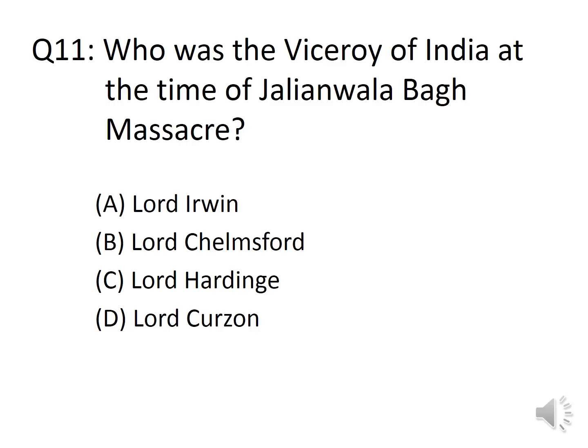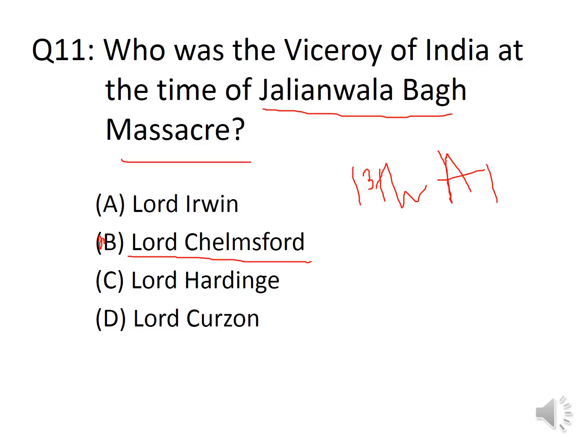Question 11: Who was the Viceroy of India at the time of Jallianwala Bagh Massacre? Options: A. Lord Irwin, B. Lord Chelmsford, C. Lord Hardinge, D. Lord Curzon. The answer is Option B, Lord Chelmsford. The Jallianwala Bagh Massacre occurred on 13th April 1919. The person who fired at the people assembled at Amritsar was General O. Dyer.